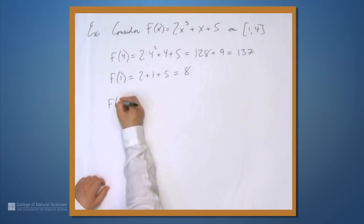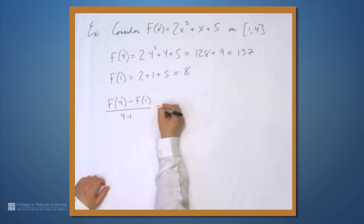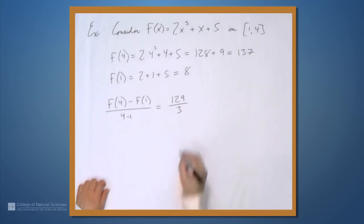So we want to find the average rate of change. That's going to be f(4) - f(1) over 4 - 1. And this is 129 over 3. Actually, 129 over 3 simplifies to 43.